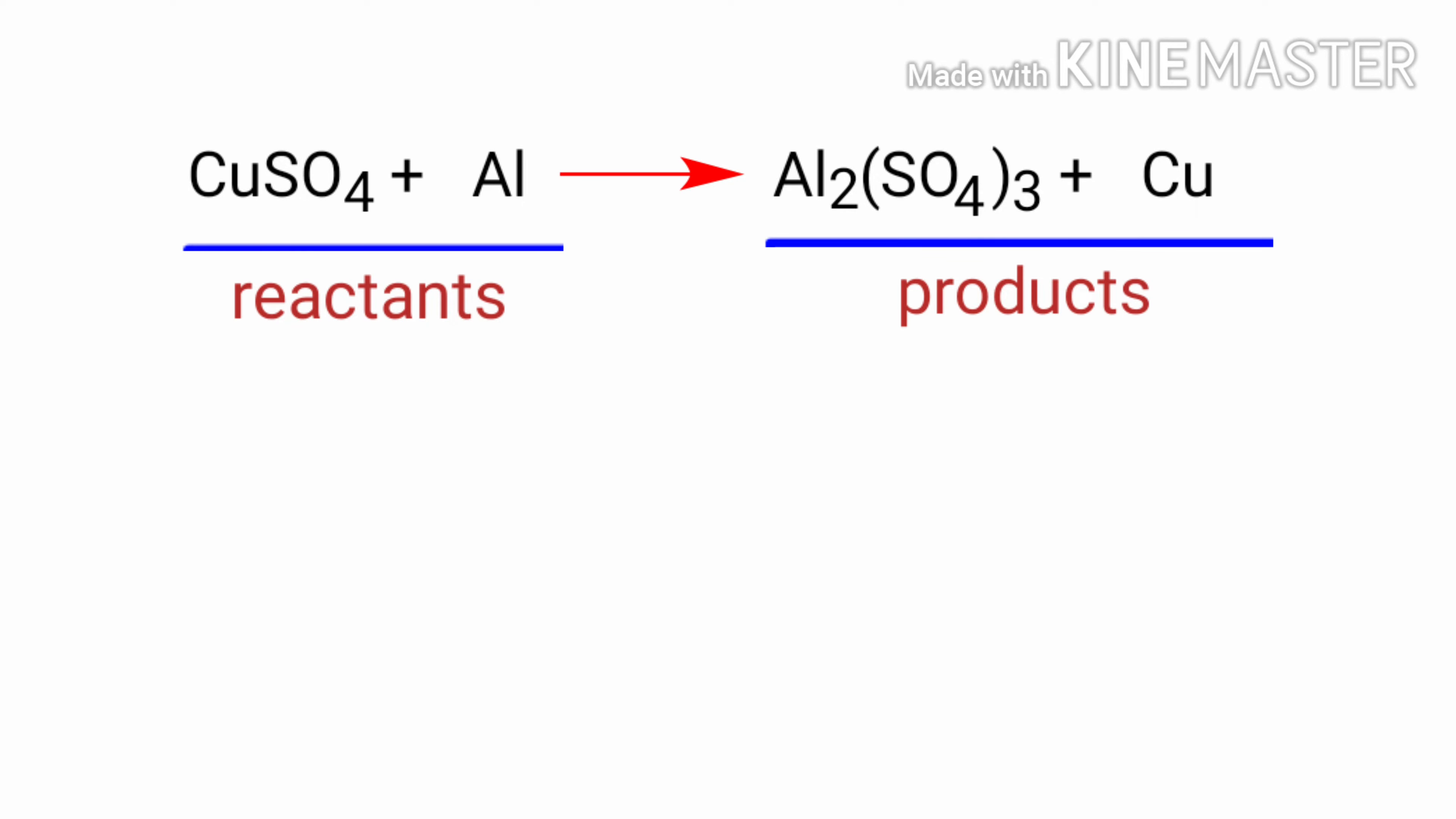In this equation, the reactants are copper sulfate and aluminium, and the products are aluminium sulfate and copper. If you look at this equation, the equation is not balanced.